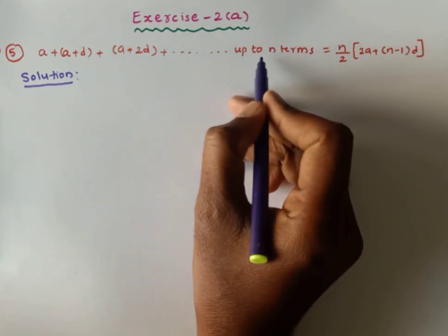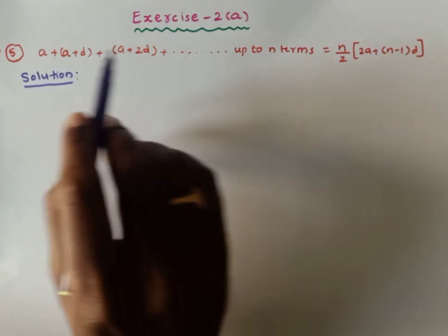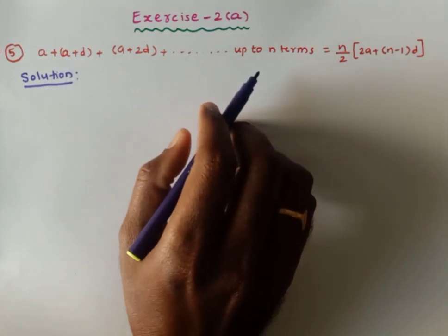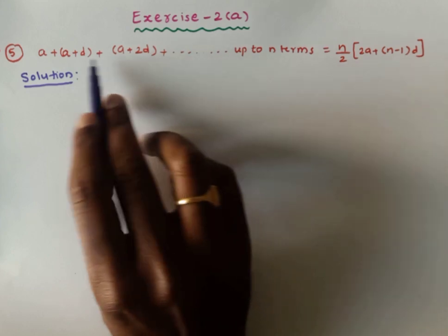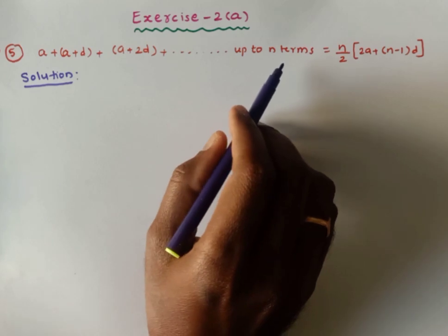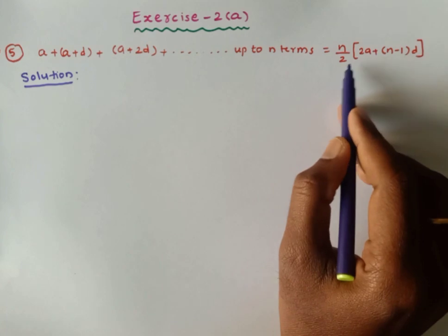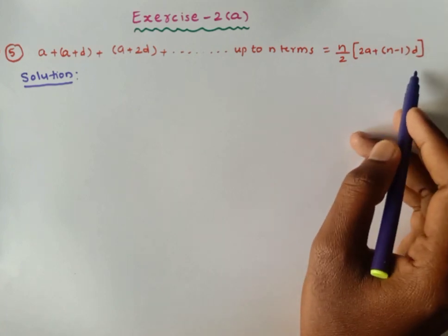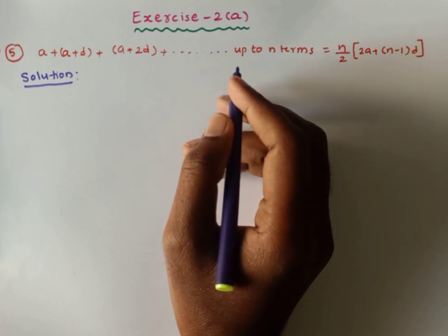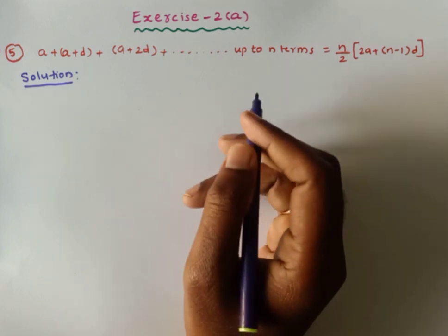The nth term is missed here. As you know, a, a+d, a+2d and so on up to n terms — this series is in arithmetic progression. We have seen this series in 10th class. The sum of n terms in AP is n/2 into (2a + (n−1)d). By using the principle of mathematical induction, we need to show this is true for all natural numbers.